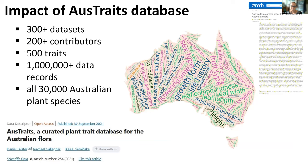AusTraits was first released in September last year with a concurrent release of a data paper in Scientific Data, and the dataset was released on Zenodo. It incorporates more than 300 datasets contributed by more than 200 contributors. In sum, there are nearly 500 unique traits and more than 1 million rows of data. We have at least one trait value for nearly all of Australia's 30,000 plant species. Some traits have good coverage — we have plant growth form data for nearly every species — and for others we might have coverage for just 50 to 100 species.